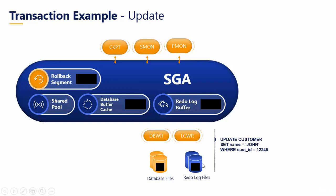If you look at the diagram, we have our database files, the redo log files, and then we have our background processes — the database writer, log writer, checkpoint, system monitor, and process monitor. And within the Shared Global Area, we have our rollback segment, shared pool, database buffer cache, and redo log buffer.